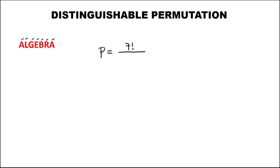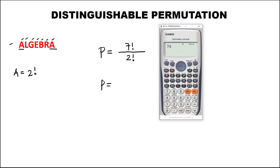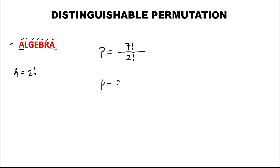From this given word, only A is the repeated letter, and A is repeated twice, so this is 2 factorial. Therefore, the permutation is 7 factorial divided by 2 factorial, which equals 2,520. So there are 2,520 ways to arrange all the letters in this given word.